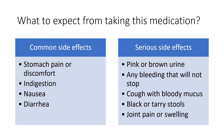What are some possible side effects? Common side effects include stomach pain or discomfort, indigestion, nausea, and diarrhea. Serious side effects can include pink or brown urine, any bleeding that will not stop, cough with bloody mucus, black or tarry stools, joint pain, or swelling.